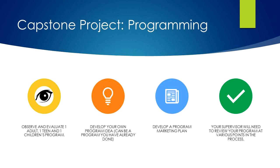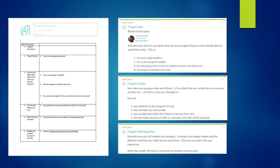You will develop a marketing plan for your program. This may be print materials, word of mouth, social media, or press releases to local newspapers. You will then plan with your supervisor and brainstorm ways to make your program better. You will develop your program using a program proposal worksheet and post your ideas in three open forum discussion boards where you can exchange ideas with your colleagues.